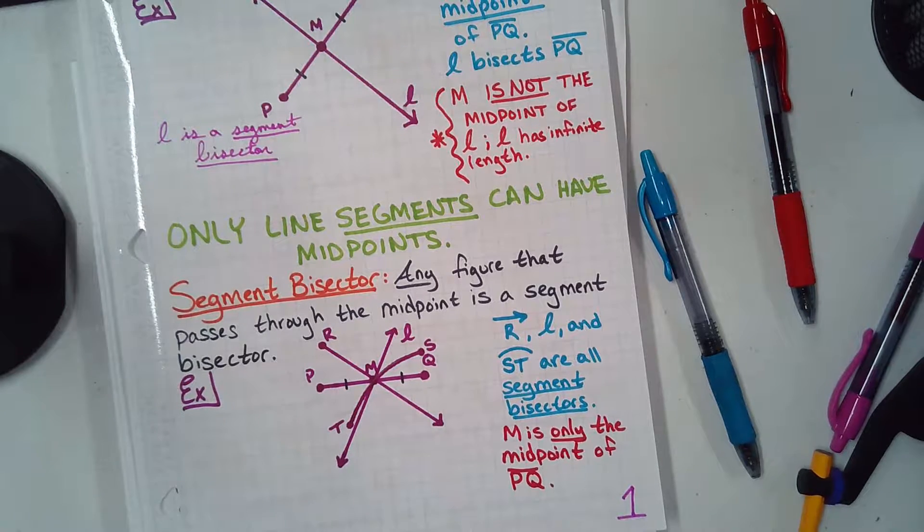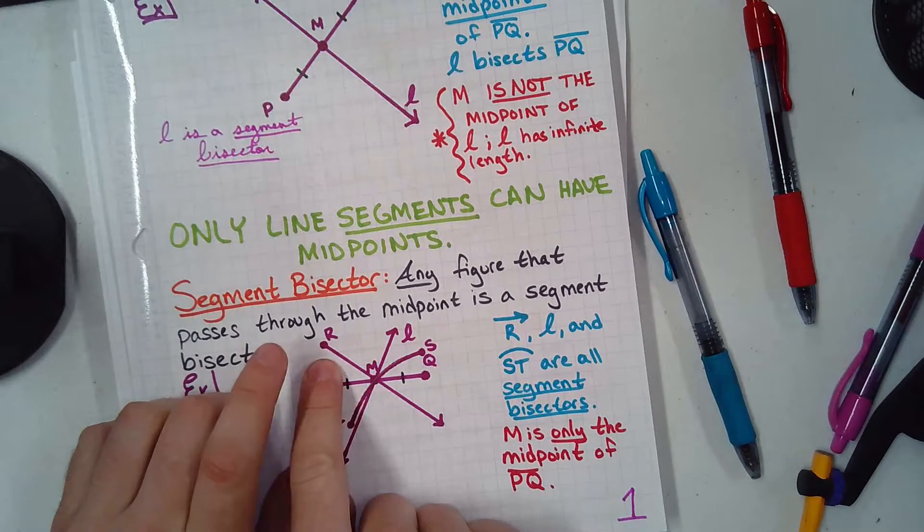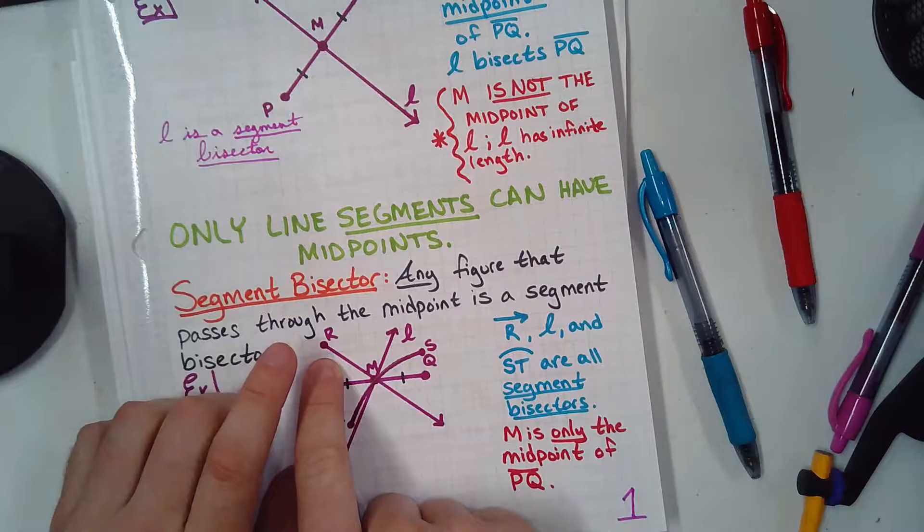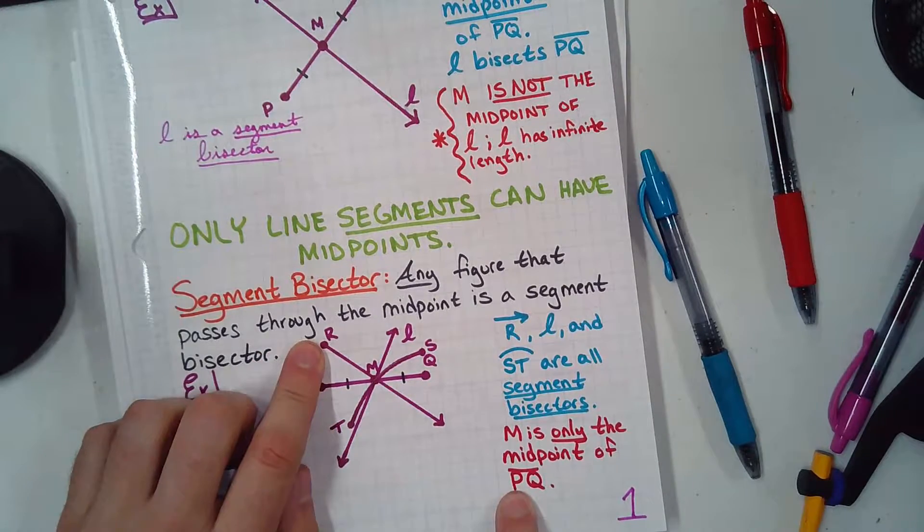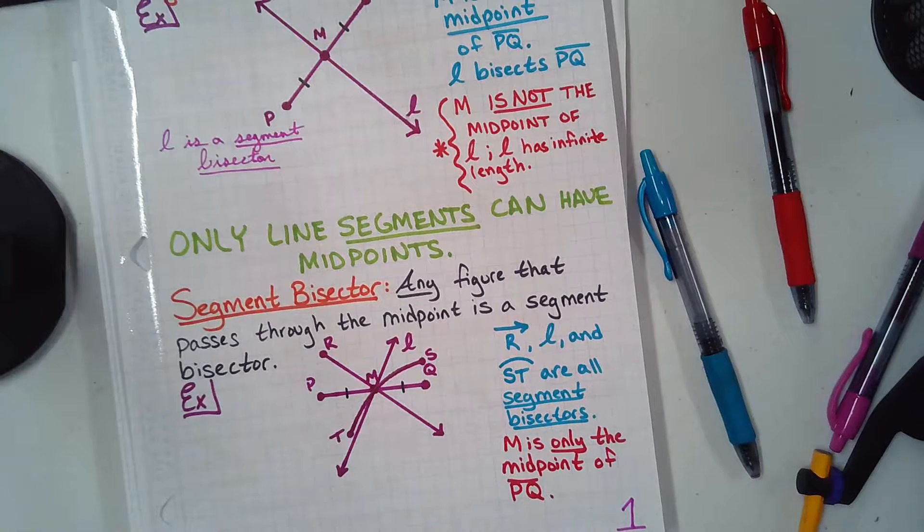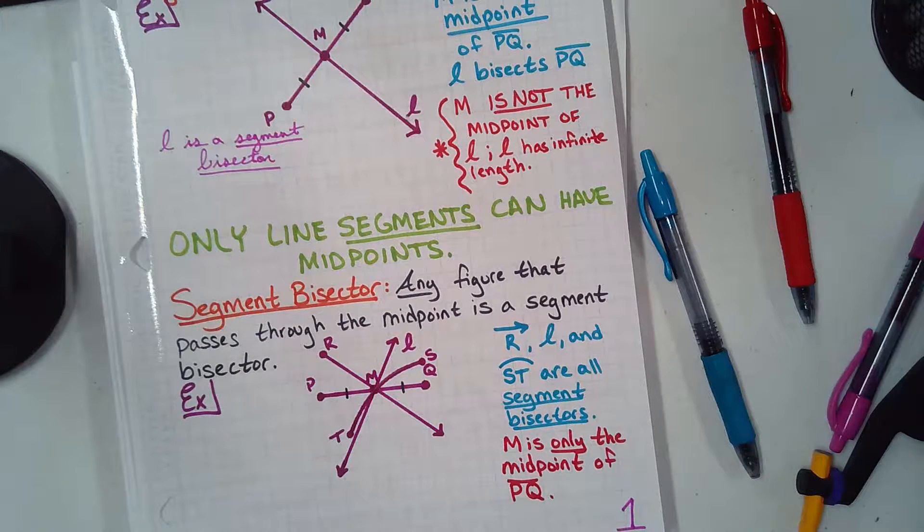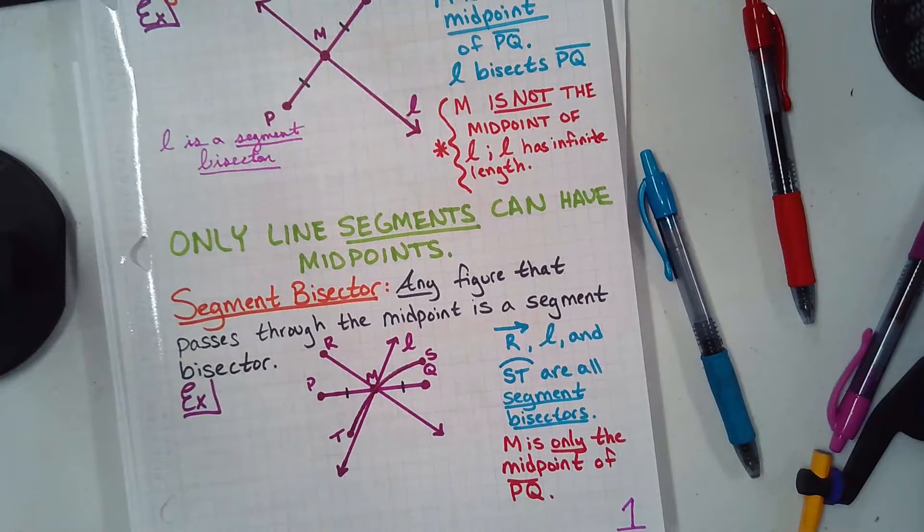Now, riddle me this, Batman. Ray has an end point, right? That it begins at. That's bizarre, right? It begins at the end point and keeps going in the other direction. Lines have no end point. They go on infinitely. Which one's longer? A line or a Ray? You'd think it was a Ray, but they're the same. Infinity is the same as infinity. Isn't that crazy?